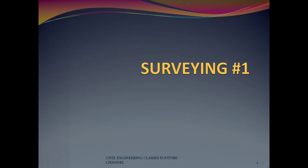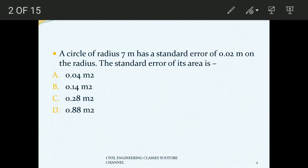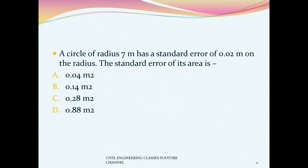Hello everyone. Welcome to Civil Engineering Classes YouTube channel. Welcome to a video of a crash course series. This is a surveying subject in the first series video. There is a question from a recent exam: a circle of radius 7 meters has a standard error of 0.02 meters on this radius. The standard error of its area is to be found.